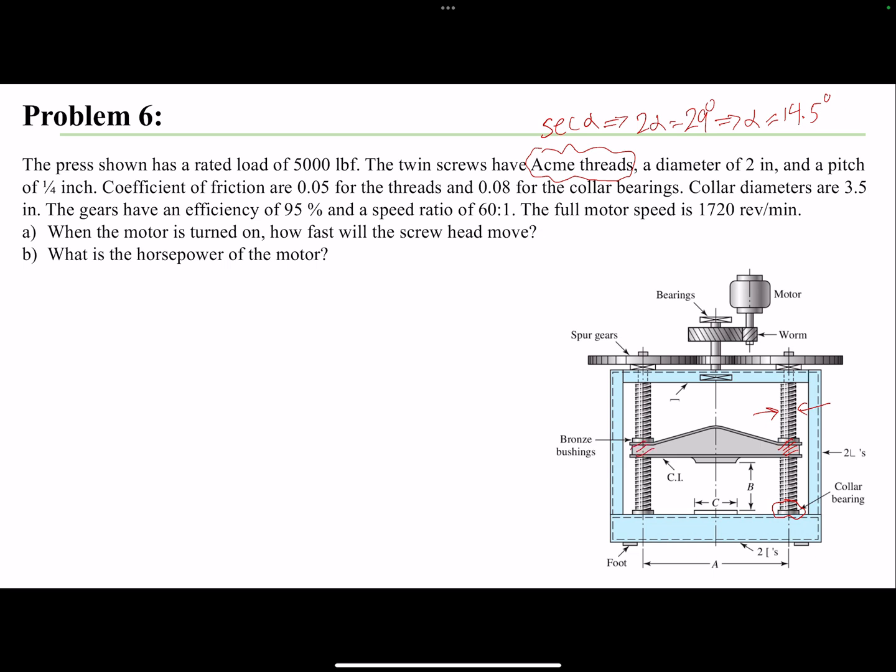So these are the two coefficients of friction that we need to work with. Collar diameters are 3.5 inches. The gears have an efficiency of 95% and a speed ratio of 60 to 1.